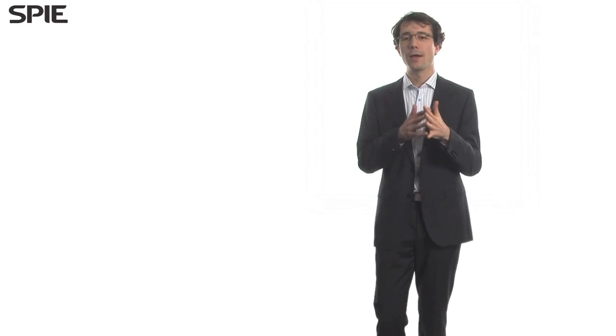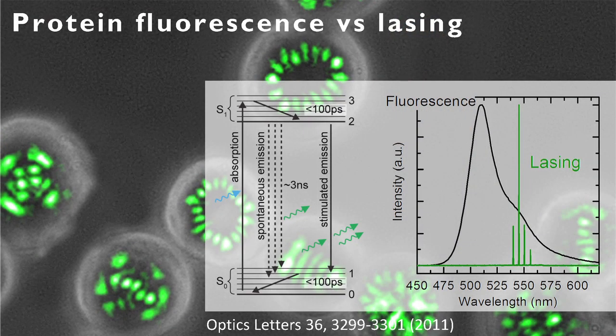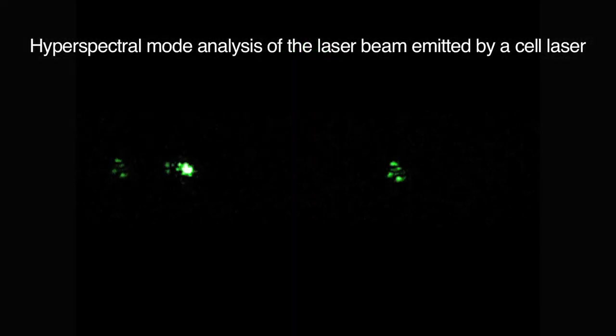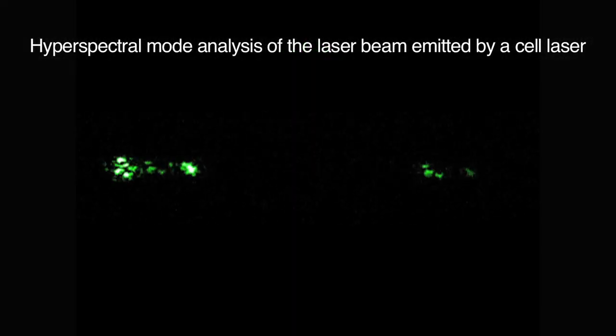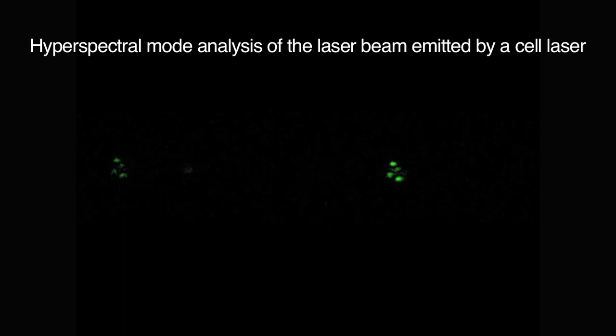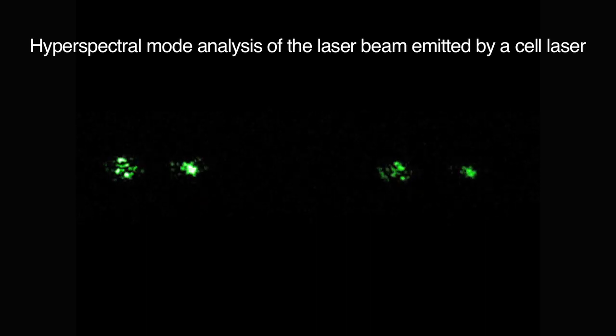There is extensive work on using fluorescent proteins just as an in vivo marker for microscopy. The main difference to my work is that in my work I'm using the fluorescent protein or the stimulated emission from the fluorescent protein. So it's a much more intense signal that we get and it's also more narrow in the emission spectrum. So we actually have the opportunity to get more information out than we would if we just used the spontaneous fluorescence from the protein.